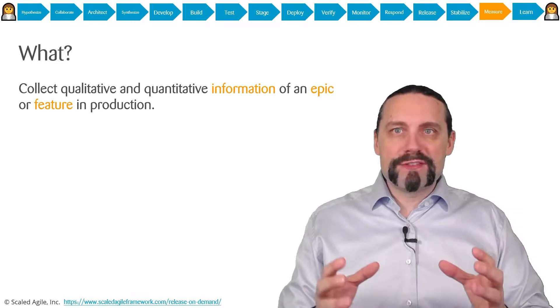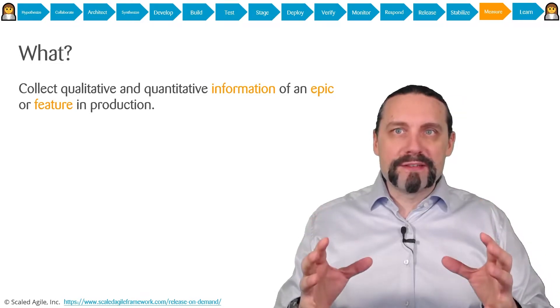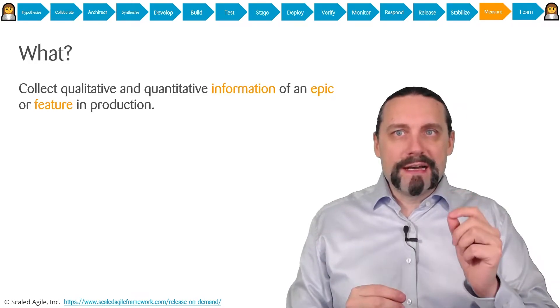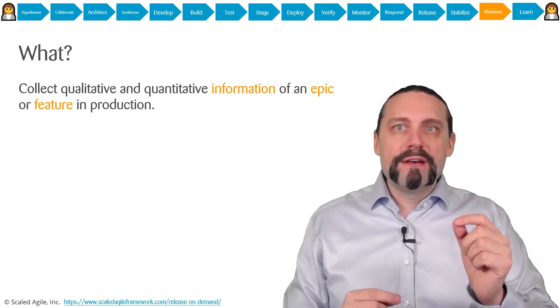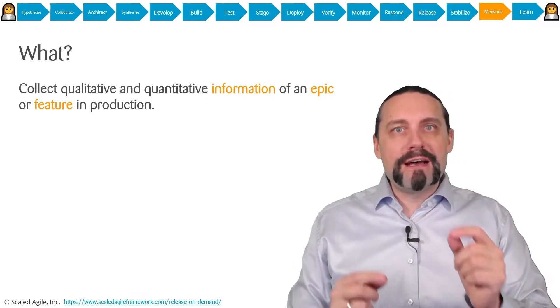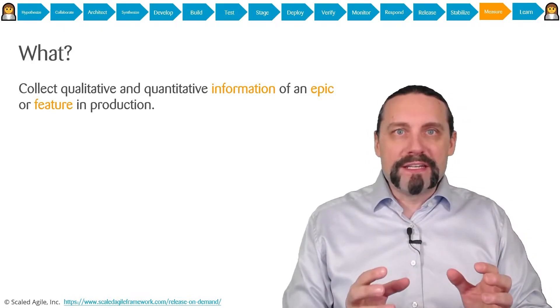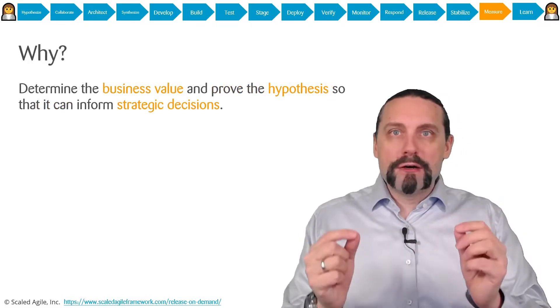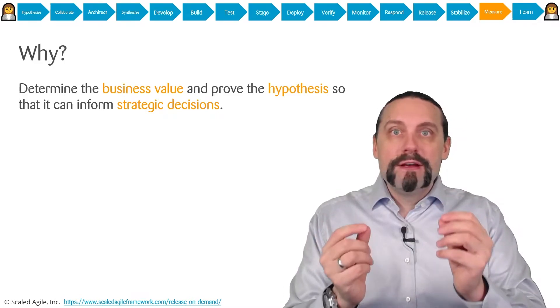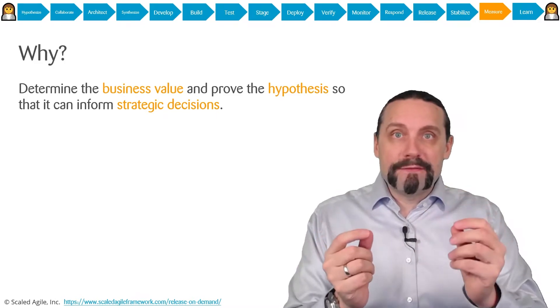Now in the measure step everything from the SAFe for DevOps health radar comes together. We're starting to collect qualitative and quantitative information about an epic or feature in production, because we want to identify the business value behind the epics and features.